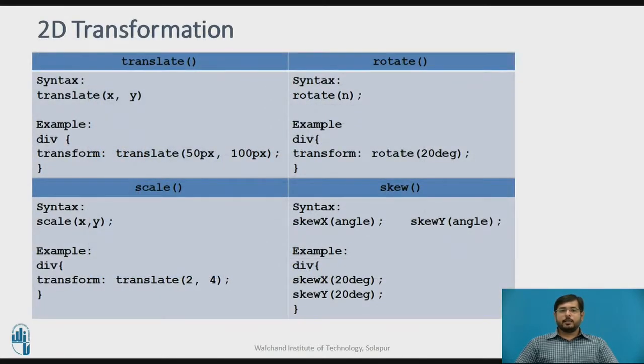These are the syntaxes and examples. See for translate(x, y), the particular element has been translated or transformed from 50 pixels to 100 pixels. 50 is x-axis, the difference of x-axis and the element will change from y-axis to 100 pixels. Second is rotate with a single value n, that is the element is rotated from 20 degrees.